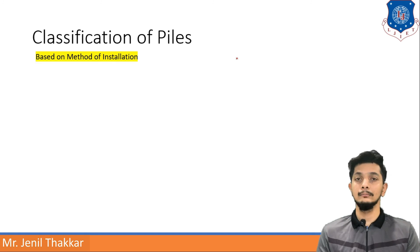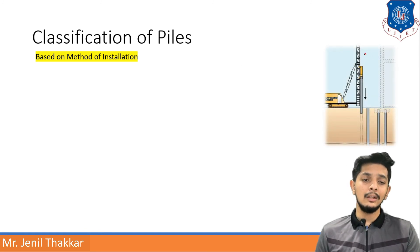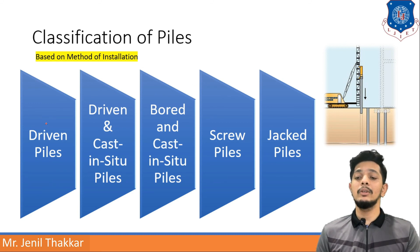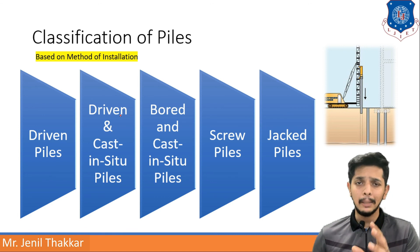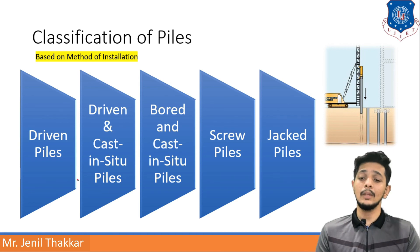The next classification is based on method of installation. Different methods are used to insert piles and piles are categorized accordingly. The first type is a driven pile, which is only inserted into the soil. The second type is driven and cast-in-situ — for example, a hollow steel pipe is driven and then concrete is poured inside.